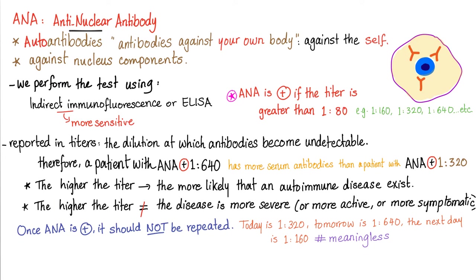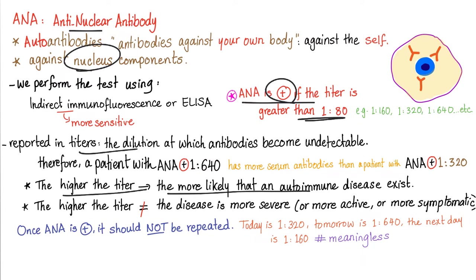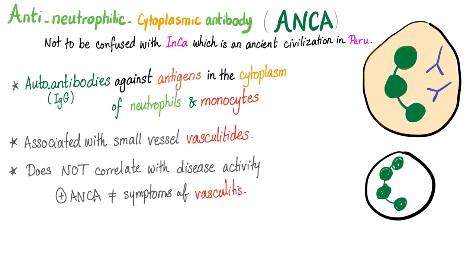Anti-nuclear antibodies, or antibodies against the nucleus, reported in titers, has to be greater than 1 to 80 to be positive. The higher the titer, the more likely you have an autoimmune disease. But the titer does not correlate with disease severity or disease symptoms.